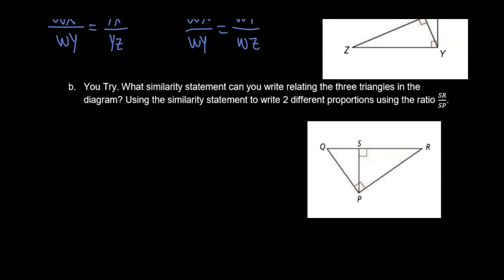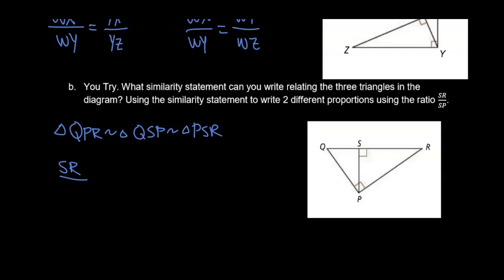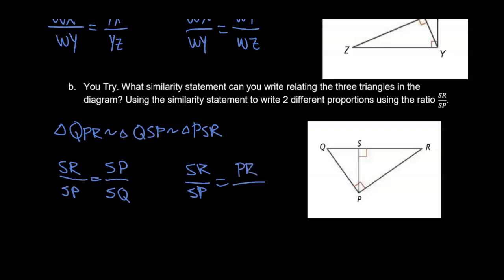What similarity statement can we write relating the three triangles in this diagram? We can say triangle QPR is similar to triangle QSP, which is similar to triangle PSR. Using that, SR to SP equals SP to SQ, and SR to SP equals PR to PQ.